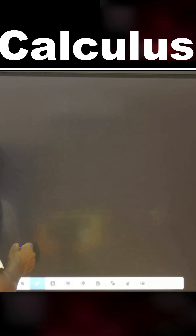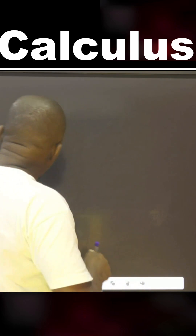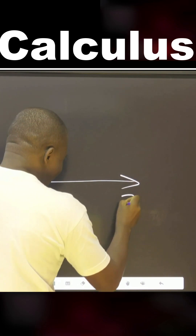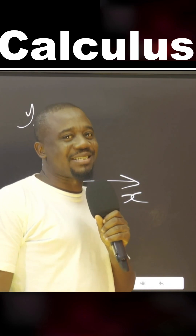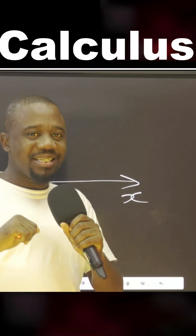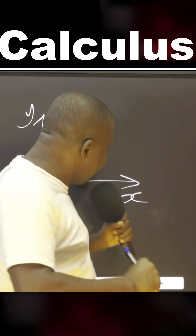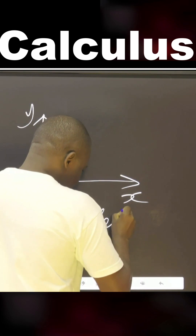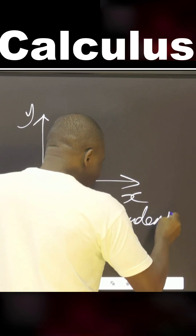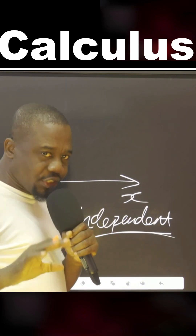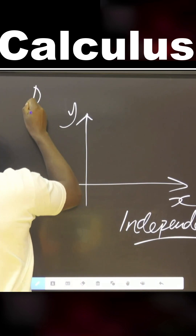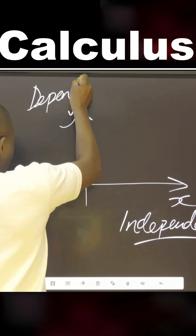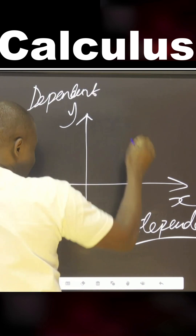Now if you want to plot a graph, we plot the y-axis and the x-axis. What should always be on the x-axis? The x-axis is the home of the independent variable. Any independent variable you are considering always goes on the x-axis, while the dependent variable goes on the y-axis. I will show you something you can use to remember this.